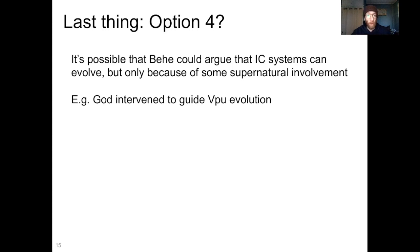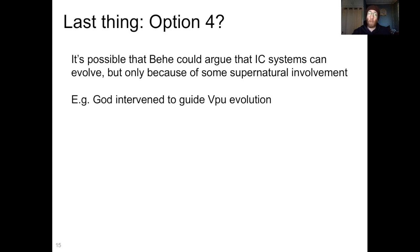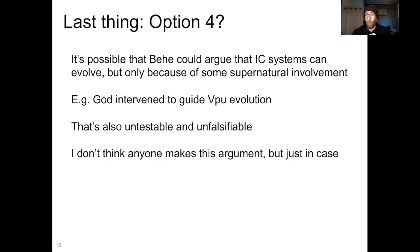Now, there is one more thing I want to touch on: the possibility of a fourth option. It's possible that Behe or someone else could argue that irreducibly complex systems can in fact evolve, but only because of some supernatural input — for example, that God intervened to guide HIV-1 group M VPU evolution, and that is why it was able to acquire an irreducibly complex trait in the documented modern history. Now, this argument is also untestable and unfalsifiable. I don't think anyone is actually making this argument, but just in case, I want to address it here.